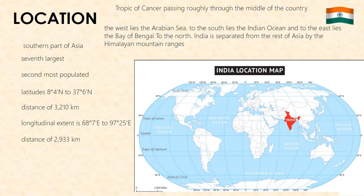India's location: India lies in the southern part of Asia. It is the seventh largest and the second most populated country in the world. North to south, the Indian mainland extends from latitudes 8°4' north to 37°6' north, covering a distance of 3,210 km.